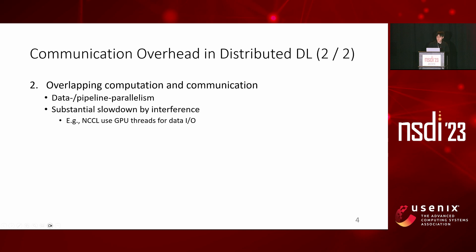The second aspect is overlapping computation and communication, which is common in data parallelism or pipeline parallelism to improve GPU utilization. However, overlapping often incurs substantial slowdown due to interference between computation and communication. The interference occurs because GPU communication libraries such as NCCL use GPU threads for data I/O. Therefore, we need to minimize the data plane overhead from I/O interference.